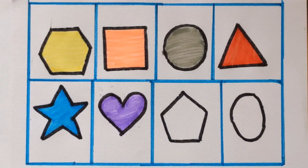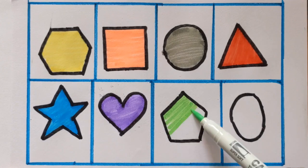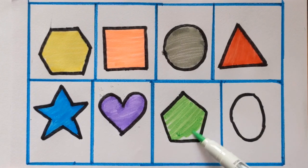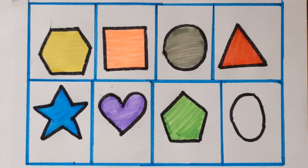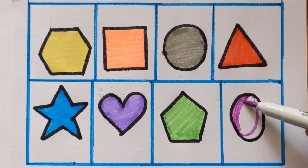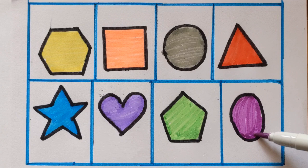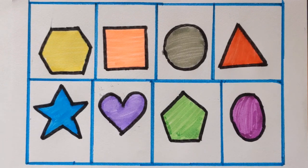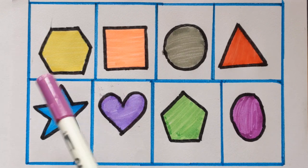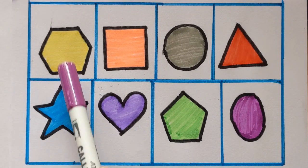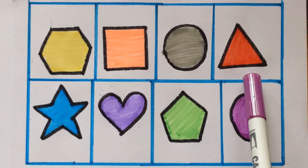Heart, purple color, violet color. Light green color. And oval, purple color. Now let's revise with me. Hexagon, yellow color. Square, orange color. Circle, gray color. Triangle.